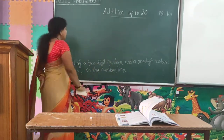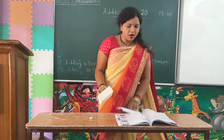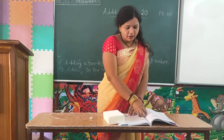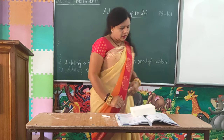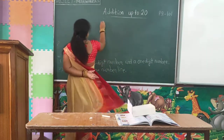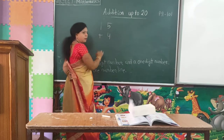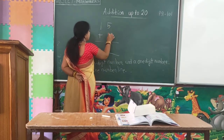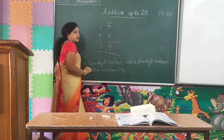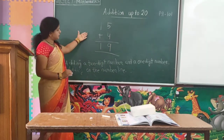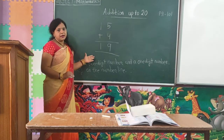Next is adding a 2-digit number and a 1-digit number. For example, the 2-digit number is 15 plus the 1-digit number 4. When you add the ones digits: 5 plus 4 is equal to 9. So 15 plus 4 is equal to 19. This is the step for 2-digit number plus 1-digit number.